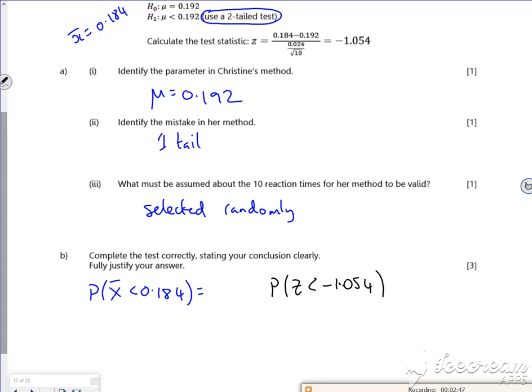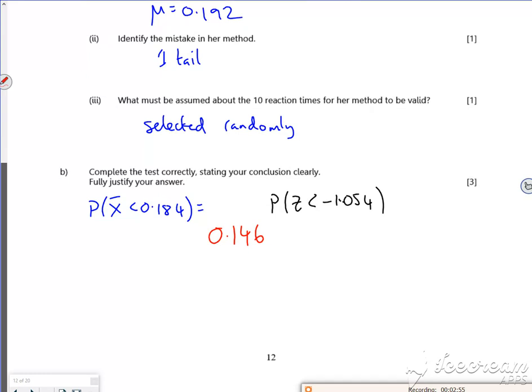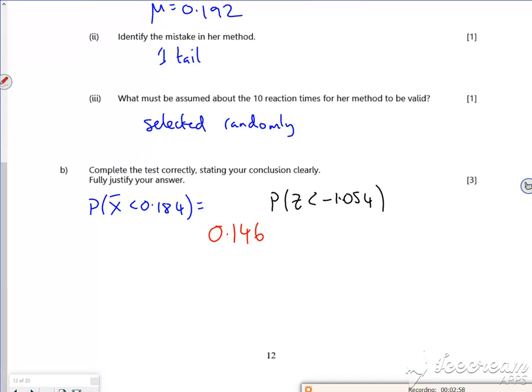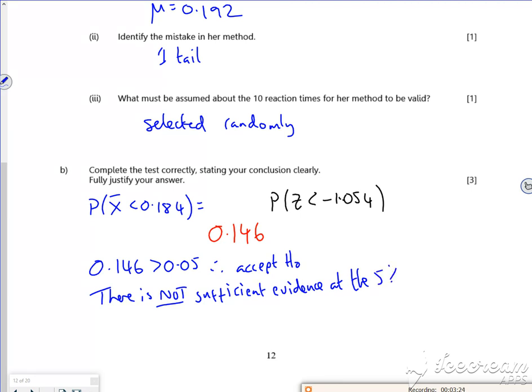And then for standardizing, it would be Z is less than minus 1.054. Because I've done the standardizing way, haven't I? Both of them give the same probability, which is 0.146. So that's like 14.6%, isn't it? So the 0.146 is greater than the 0.05. Therefore we accept H null. So there is not sufficient evidence.